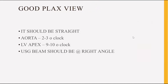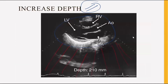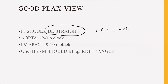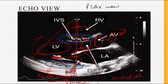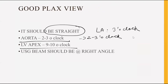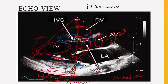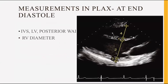The characteristics of a good PLAX view are that it should be straight — the LA should be at the 3 o'clock position, the aorta at 2 to 3 o'clock, and the LV apex at 9 to 10 o'clock. The ultrasound beam should be at a right angle, that is, at 90 degrees.